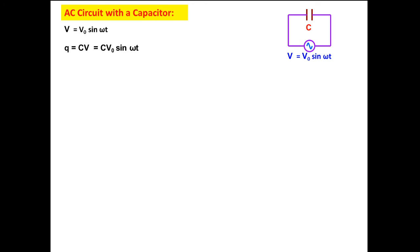The instantaneous charge over the capacitor is Cv, that is Cv₀ sin ωt, and rate of flow of charge, that is instantaneous current, so its differentiation will be Cv₀ω cos ωt. But see, the instantaneous voltage is a function of sin, so we want to convert this cos in terms of sin. So this I we can write V₀ by 1 by ωC cos ωt.